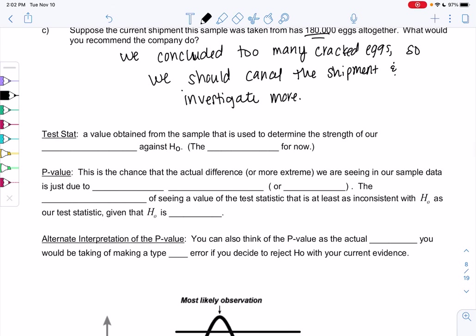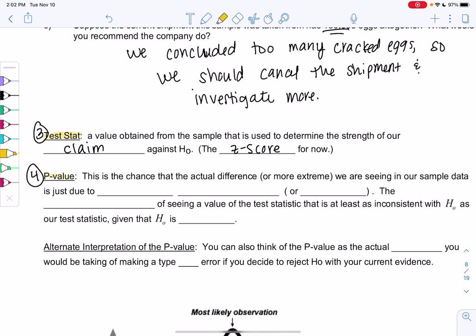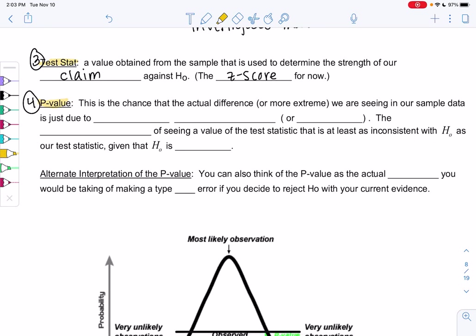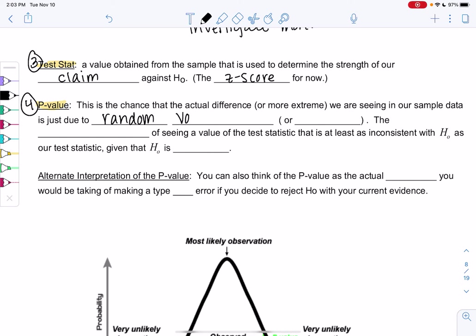Let's finish up these definitions. Step three, that's called the test stat. It'll be a value obtained from the sample that is used to determine the strength of our claim. For now, it's the Z-score. Step four is that new thing called the p-value. This is the chance that the actual difference or more extreme we are seeing in our sample data is just due to random variation or chance. It's also the probability of seeing a value of the test statistic that is at least this consistent with H0 as our test statistic, given that H0 is true.